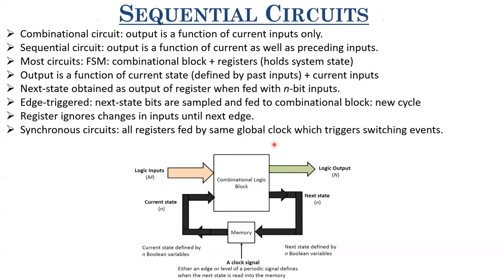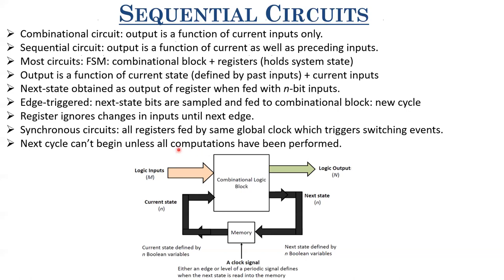There are asynchronous circuits as well, which are event driven. In asynchronous circuits, all registers are not fed by the same clock. Depending upon some events, some registers may be fed by a different clock. Also, the next cycle of computation cannot begin unless all computations in the present cycle have been performed. If you have a series of sequential circuits, until all computations have been performed, you won't apply the next active clock edge. So your clock period depends upon the worst case time it takes for computing one such sequential circuit.